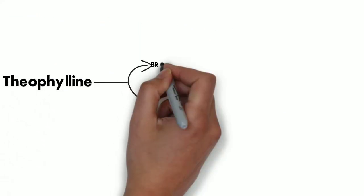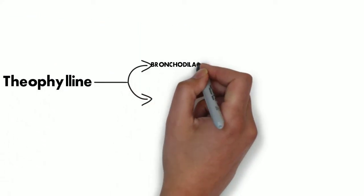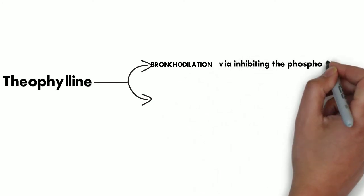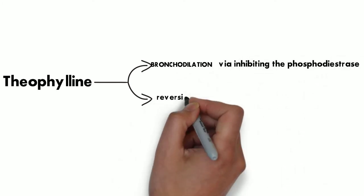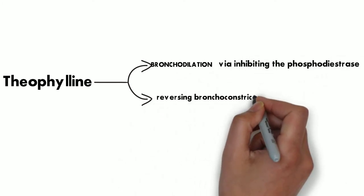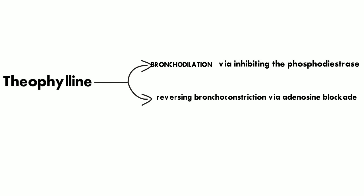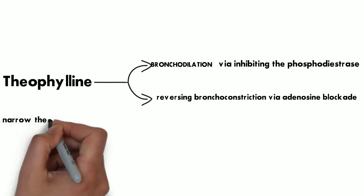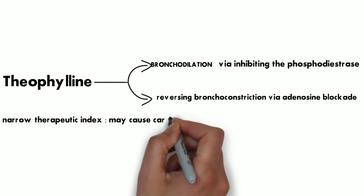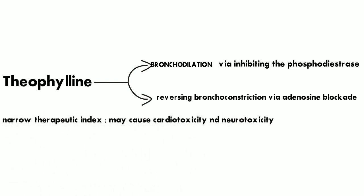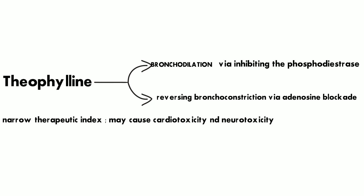Coming to theophylline, it causes bronchodilation by inhibiting the phosphodiesterase and it also reverses the bronchospasm which is induced by adenosine. However, the concern with theophylline is that it has a narrow therapeutic index and can cause cardiotoxicity and neurotoxicity.